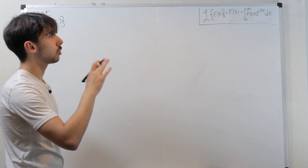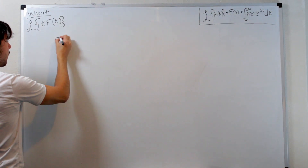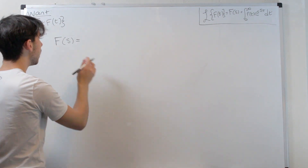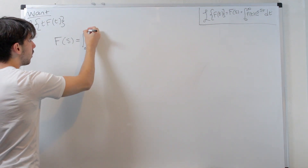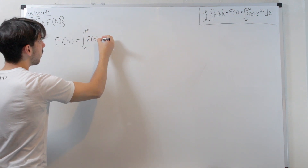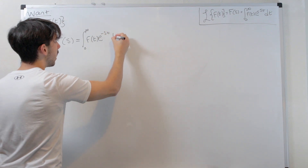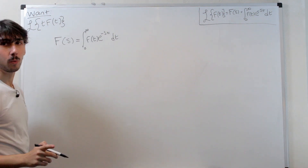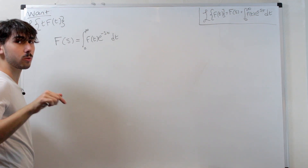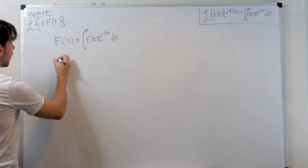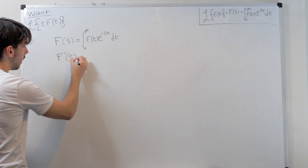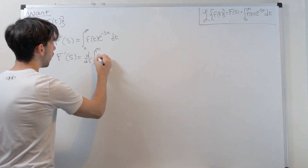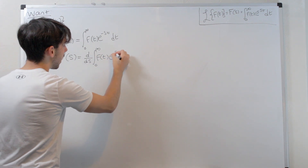So let's consider for a second just normal F of s. Capital F of s is the Laplace transform of just f of t, not t·f(t). So F of s is the integral from zero to infinity of f of t times e to the minus st. This is just literally the plain old factory reset Laplace transform — it's completely normal — but we're going to do something quite cool. We're going to differentiate both sides with respect to s, not t, and what we'll get is that the first derivative of capital F of s is equal to the derivative with respect to s of the integral from zero to infinity of f(t)·e to the minus st dt.